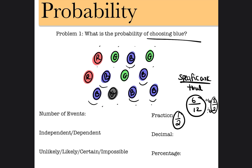The number of events is 1, meaning there's only one action taken — they choose blue. Now, if they said what is the probability of choosing blue then choosing red, that's two actions and two events. But because they are only doing one action, which is choosing blue one time, the number of events is just one.